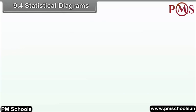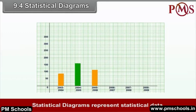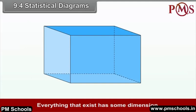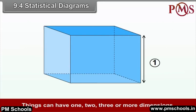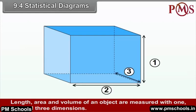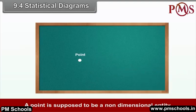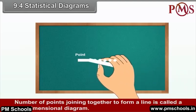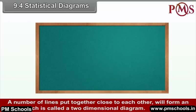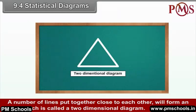9.4 Statistical Diagrams. Statistical diagrams represent statistical data. Everything that exists has some dimension — things can have one, two, three or more dimensions. Length, area and volume are measured with one, two and three dimensions respectively. A point is a non-dimensional entity. A number of points joining to form a line is called a one-dimensional diagram. A number of lines put together close to each other will form an area, which is called a two-dimensional diagram.